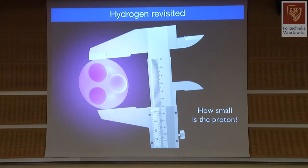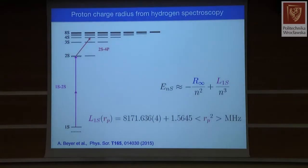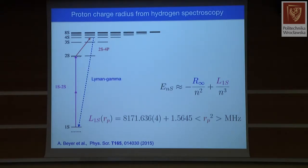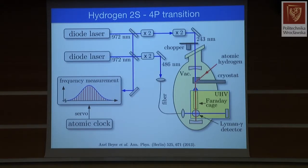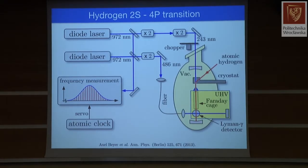To either resolve or confirm the proton radius puzzle, in our laboratory we are trying to redo some of these spectroscopy experiments with our advanced tools. The first experiment to produce results — accepted for publication in Science — is the thesis work of Axel Beyer, who looked at the 2S-to-4P transition as an auxiliary transition. This is observed by detecting the emission of Lyman-gamma photons from the upper state. It is a single-photon transition — probable but not narrow — so one has to determine the line center very accurately.